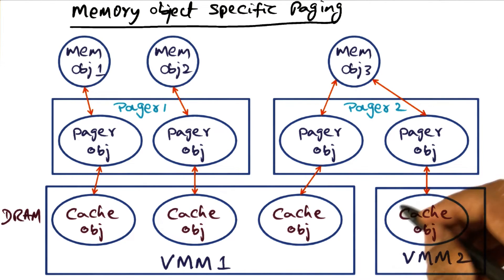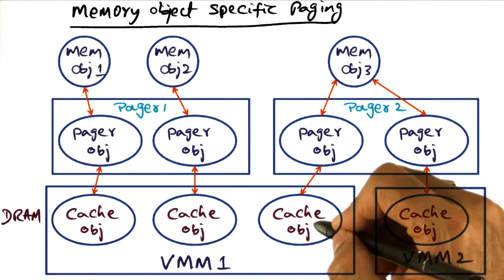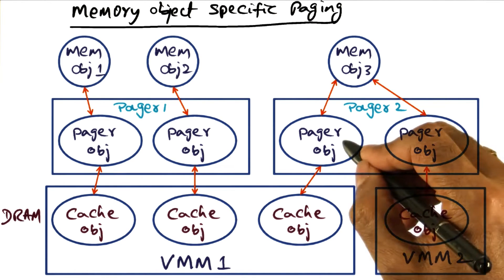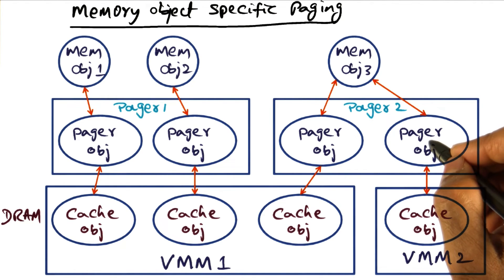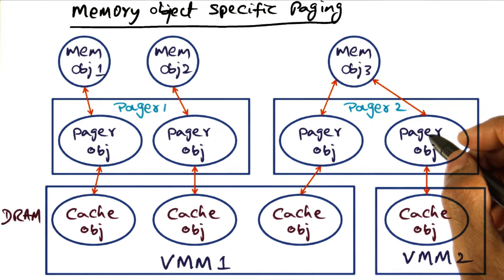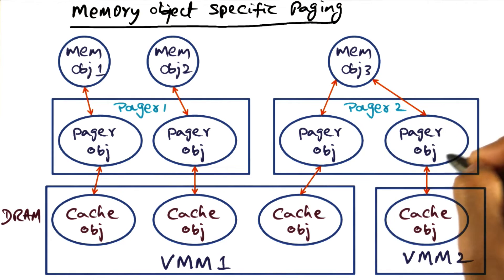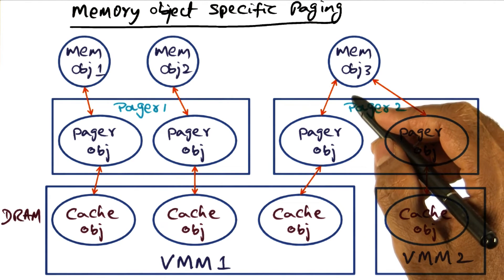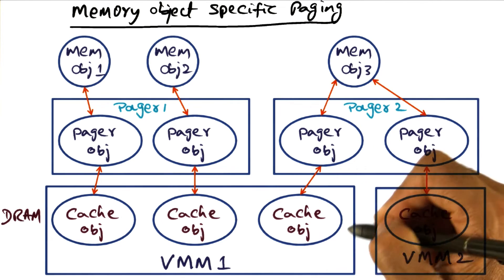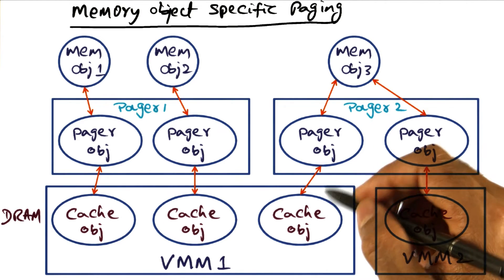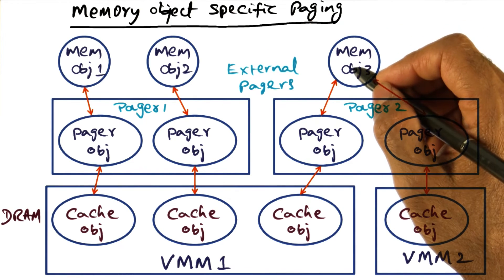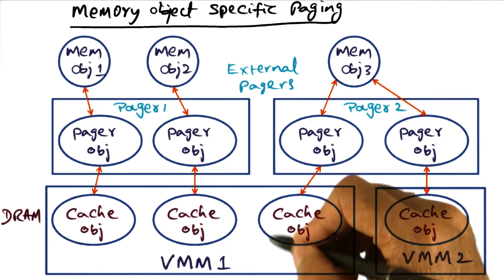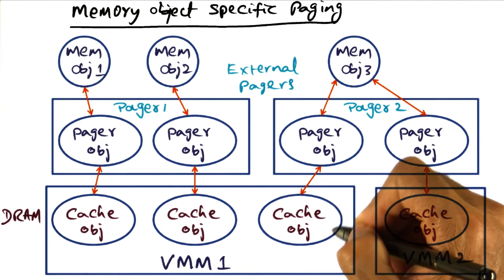If coherence is needed for the cached representation of this memory object in the DRAM of both address spaces, then it is the responsibility of these two pager objects to coordinate that. This is not something the Spring system itself is responsible for, but it provides the basic mechanisms through which these entities can manage the regions they are mapping in terms of memory objects and their DRAM representations. In other words, external pagers establish the mapping between virtual memory — indicated by memory objects — and physical memory, represented by the cached objects.